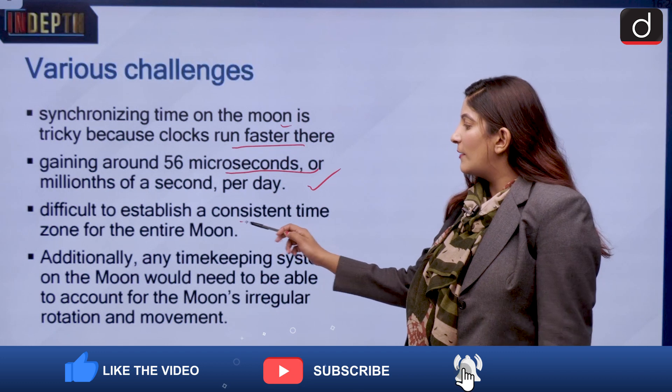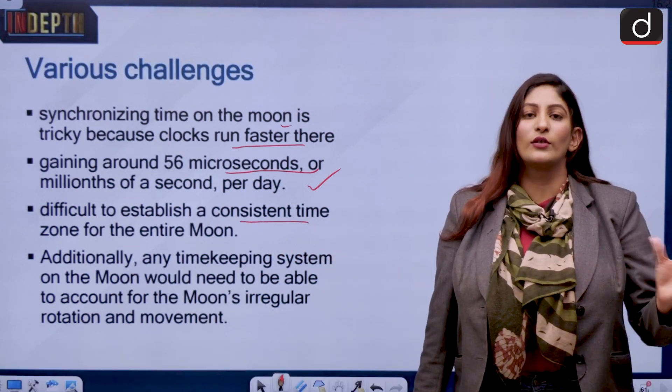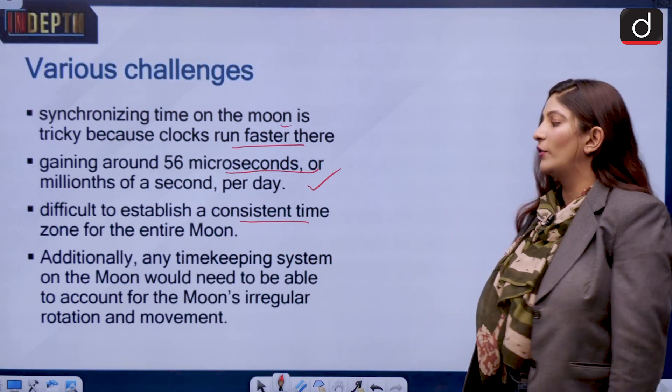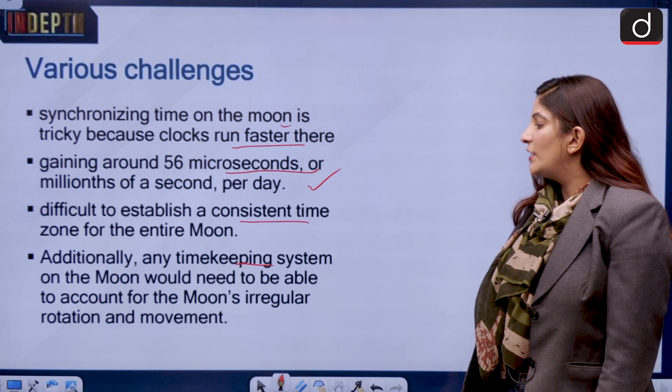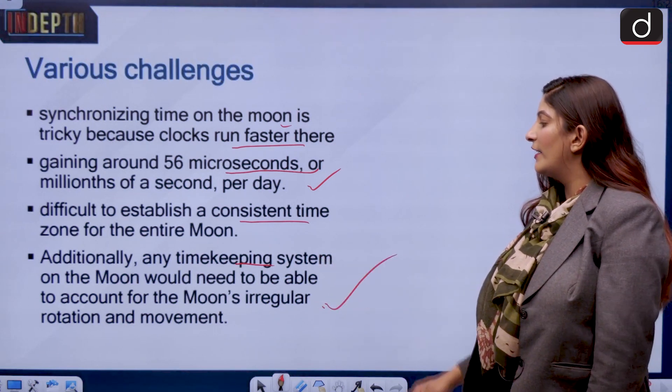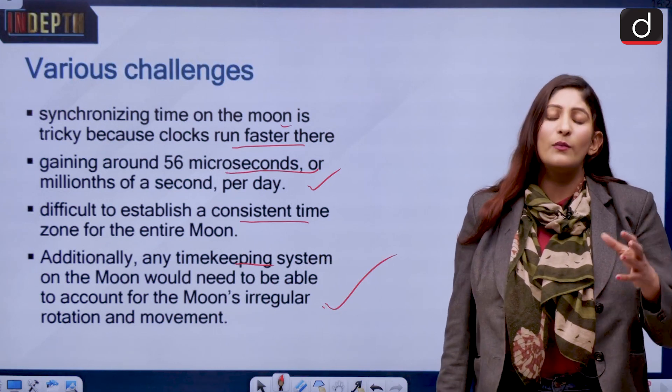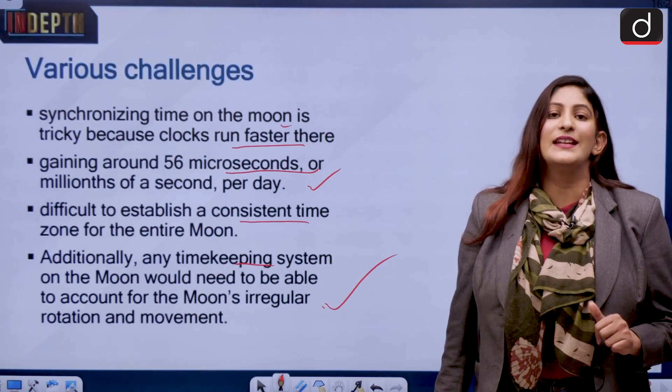It would be difficult to establish a consistent time zone for the entire moon because of the terrain. Terrain is also very different from what we see on the earth. Additionally, any timekeeping system on the moon would need to be able to account for the moon's irregular rotation and movement, which right now the scientists do not understand. This is a very nascent stage.